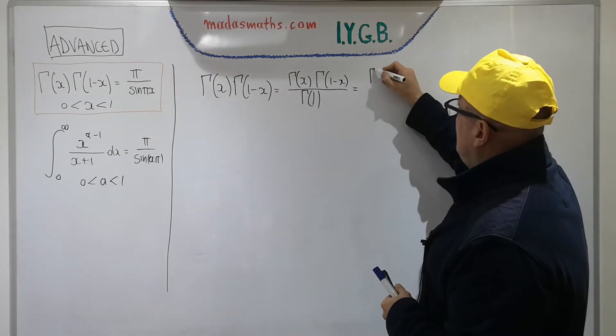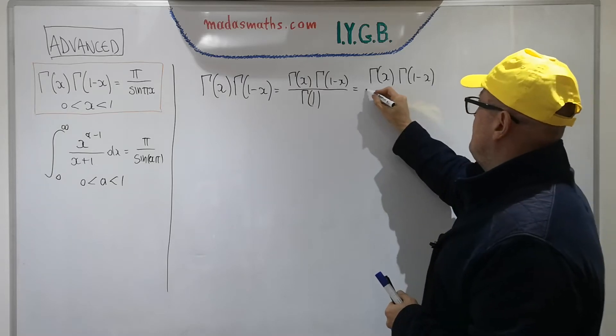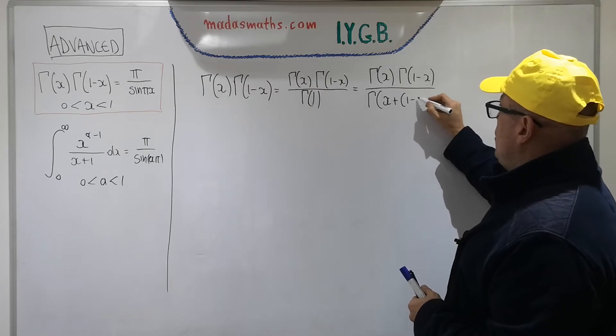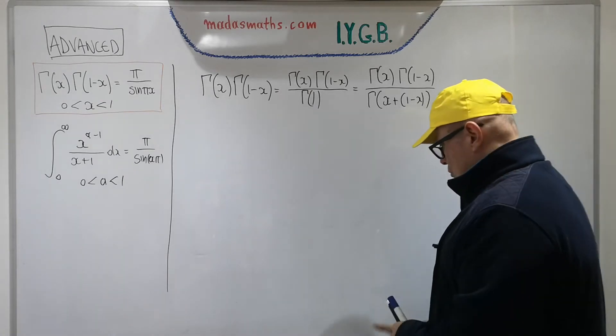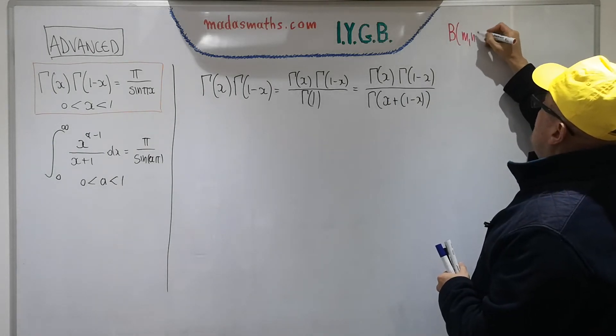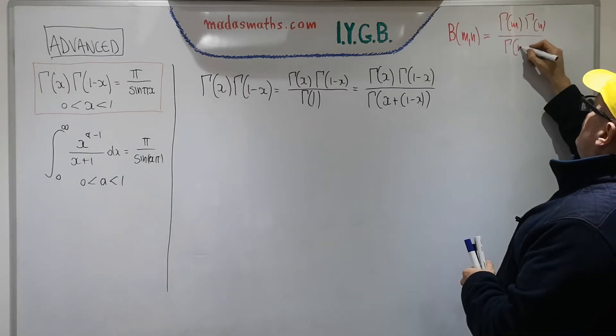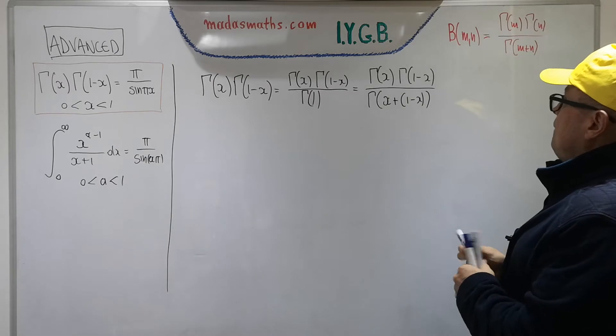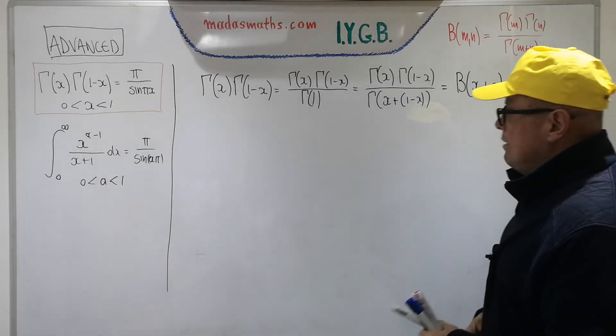My next step is to actually use the formula that connects gamma and beta. I'm using the fact that beta of m, n equals gamma of m times gamma of n divided by gamma of m plus n. Using that fact, I can say this is in fact now the beta of x, 1 minus x.